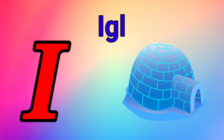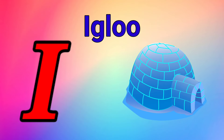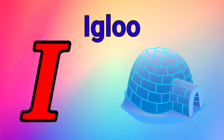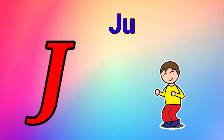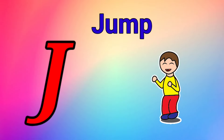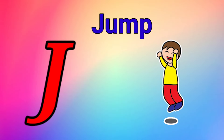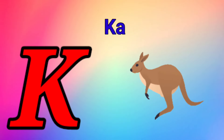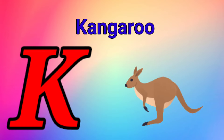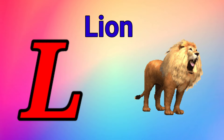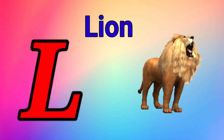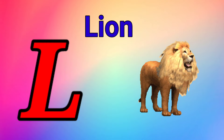I is for igloo, i-i-igloo. J is for jump, j-j-jump. K is for kangaroo, k-k-kangaroo. L is for lion, l-l-lion.